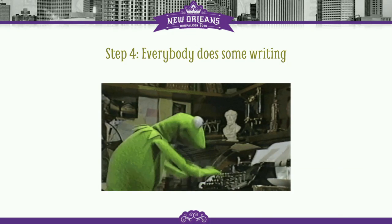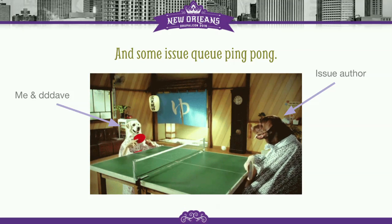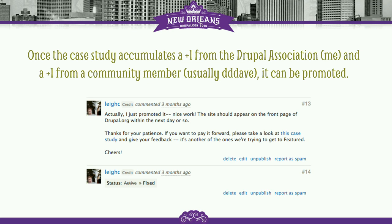Back to the submission process — everybody does lots and lots of writing, and then there's some issue queue ping pong. That's me and Dave on one side and maybe you on the other, and the issue in the middle is going from 'needs review' to 'needs work' to 'needs review' to 'needs work.' Once we've done all of our feedback and our back and forth and everybody's happy, the case study needs to accumulate a plus one from the community — generally Dave — and a plus one from the Drupal Association, which is almost always me, but occasionally Tatiana. Once it has that, it can be promoted. It's a check to make sure that the right case studies are getting promoted in the right way and that the content really is the best that it can be.